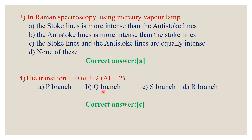For reference: Q branch has delta J = 0; B branch has delta J = −1; R branch has delta J = +1; and S branch has delta J = +2. The correct answer is C.